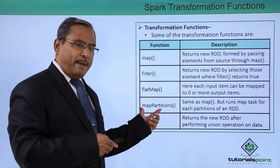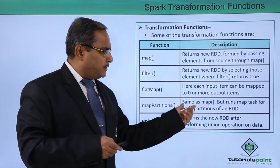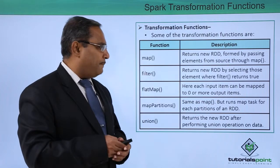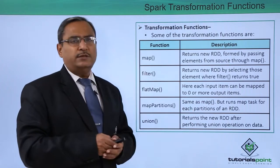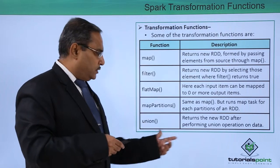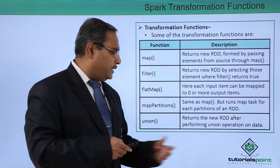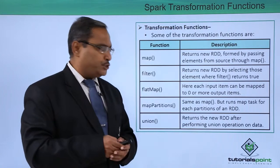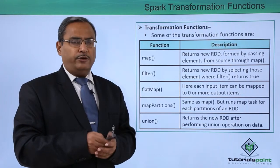Next one is the map partitions. Same as map but runs map task for each partition of an RDD. Next one is union. Returns the new RDD after performing union operation on the data.